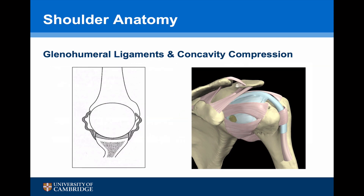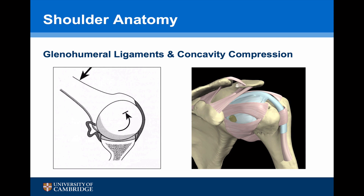The glenohumeral ligaments, which are actually condensations of the joint capsule, work as check reins. They tighten at the extremes of certain movements, such as abduction and external rotation for the anterior inferior glenohumeral ligament, which triggers mechanoreceptors that help to stabilise the joint. The intact capsule and glenohumeral ligaments also create negative intra-articular pressure, which increases stability by concavity compression.